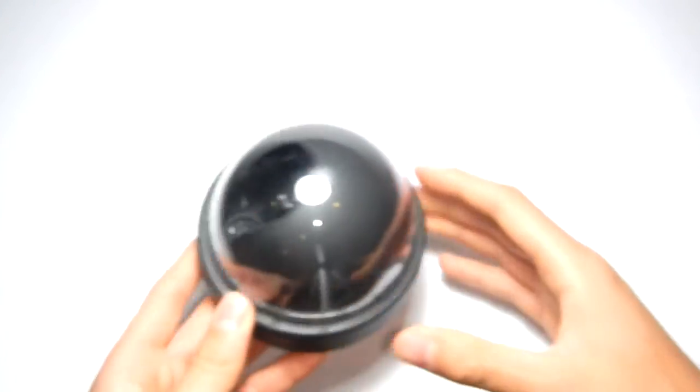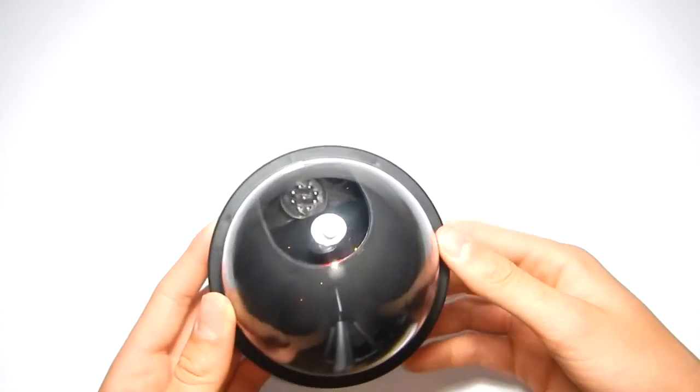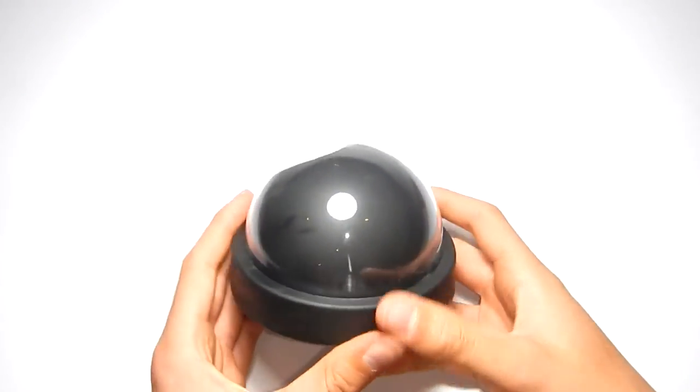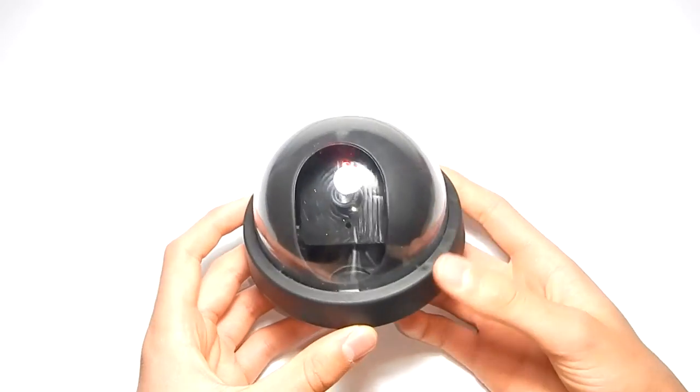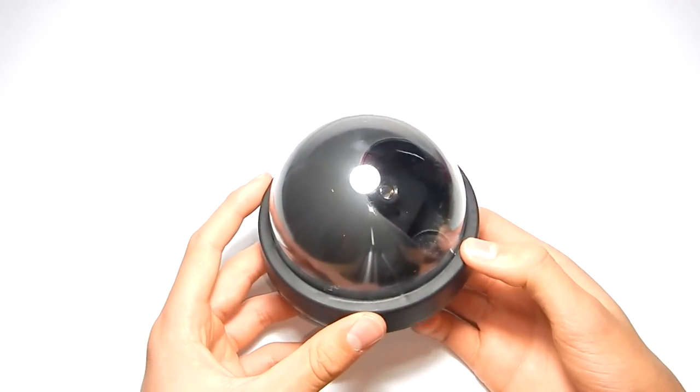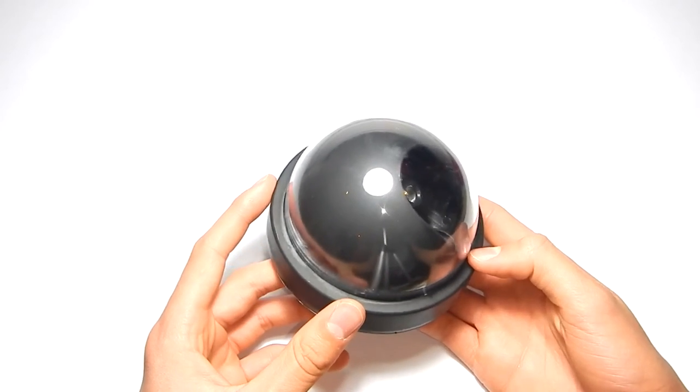This camera does actually look quite realistic. If we look quite close, there is a glass kind of bit where the lens should be and that does actually look quite realistic. And this overall interface is quite realistic. So if you wanted to just make it look like you had CCTV on the cheap side, you could go for this which I got for a pound. And I think on eBay you can get it for a couple of quid as well.